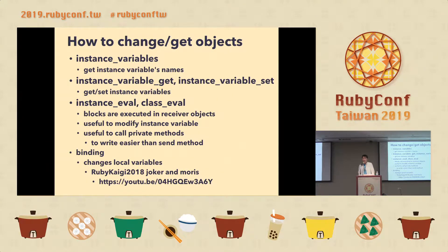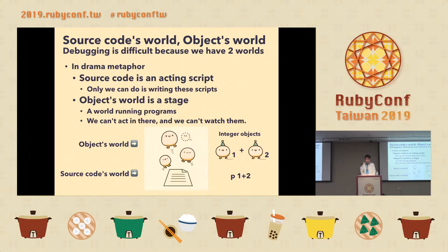How to change or get objects — we can modify objects. Especially, instance_eval is useful to change instance variables. We can also call private methods using instance_eval. Using binding, we can change local variables, but I don't recommend it. In Ruby we have two worlds: source code world and object world. In a drama metaphor, source code is an acting script.